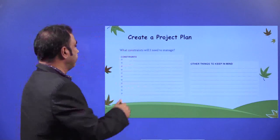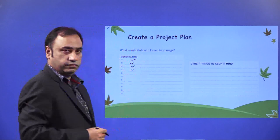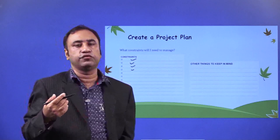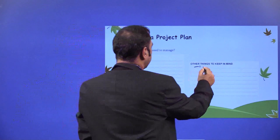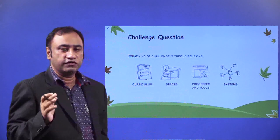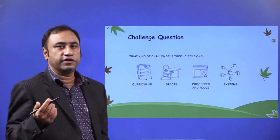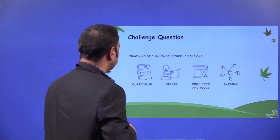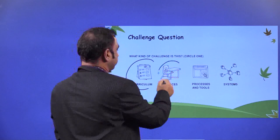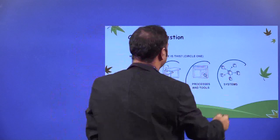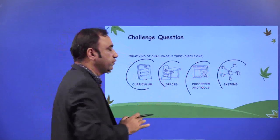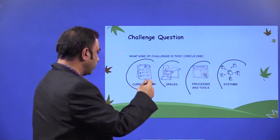What constraints will I need to manage? You need to understand what the constraints or limitations of your particular project are, so that you can try to find solutions to those constraints. What are the other things to keep in mind for this project? Record all those points, because once we record everything our idea becomes very clear and we get clarity on our project. What kind of challenge is this? Circle one: Curriculum, Spaces, Processes and Tools, or Systems. List down all the things you are trying to solve, and then select the one you want to solve.